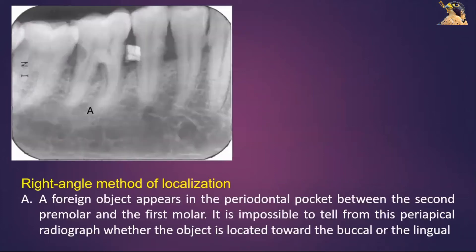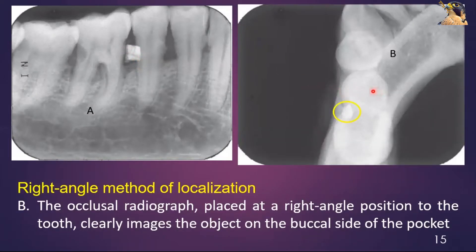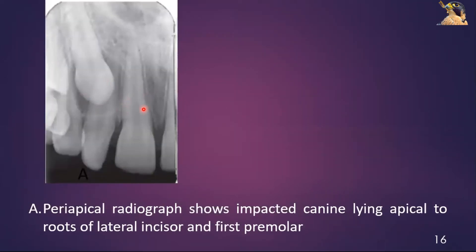Using the right angle or cross-section technique, an object appears in the periodontal pocket between the first premolar and the first molar. It is impossible to tell from this periapical radiograph whether the object is located towards the buccal or lingual side. However, this occlusal radiograph placed at a right angle position clearly indicates that the object is present on the buccal side of the pocket.